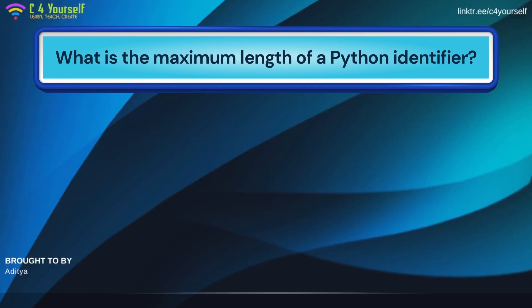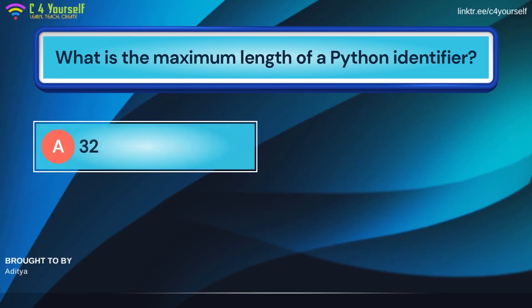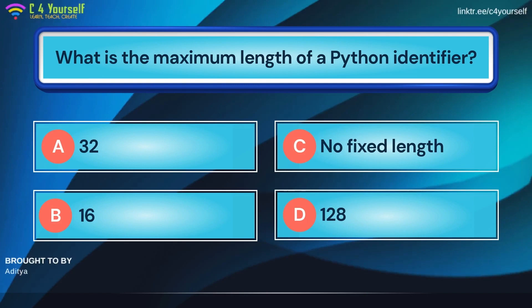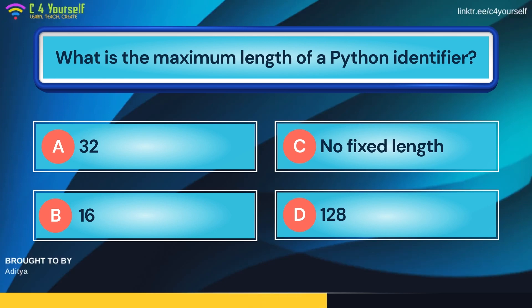First question and you're on the clock. What is the maximum length of a Python identifier? The options are 32, 16, no fixed length, and 128. I will give you 15 seconds to pick an option. Ready? Start the timer.